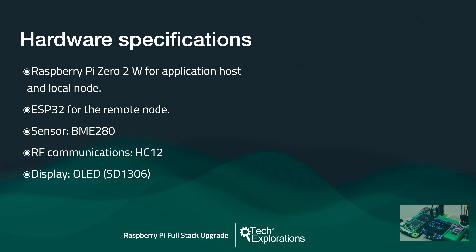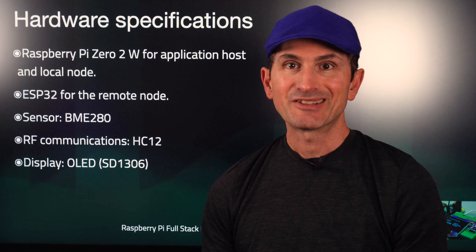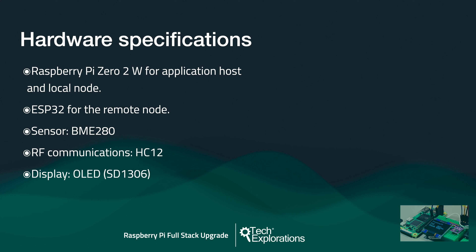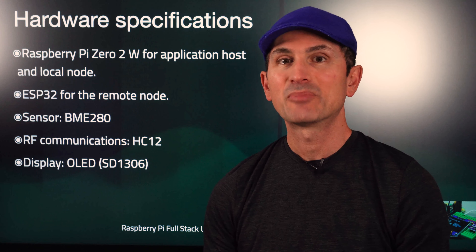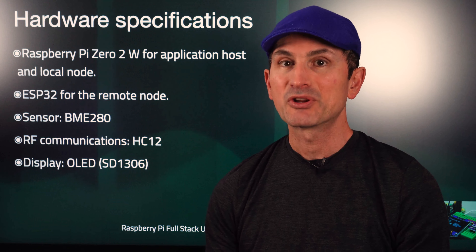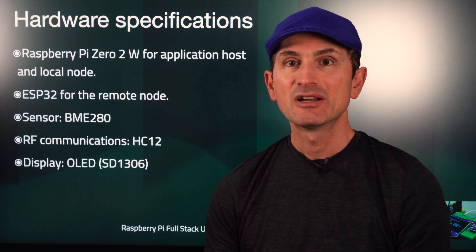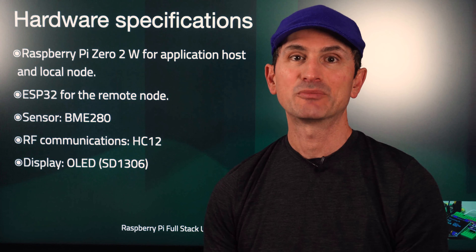Let's take a quick look at this course's hardware specifications and requirements. The overall hardware configuration is inherited from the original project. There's a Raspberry Pi that acts as the application host and the local node for the system. In this course, I've decided to use a Raspberry Pi 02W because of its small size and low cost, while it packs more than enough power for our needs. However, you can use any Raspberry Pi with a Model B header.